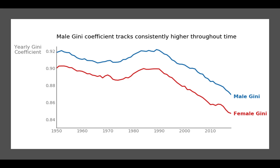One other interesting thing we see is that basically since about 1990, the Gini coefficient has been tracking downward. That really just represents people's tendency to lean more toward unique names for babies, rather than to follow convention and continue with the same sort of popular names each year.